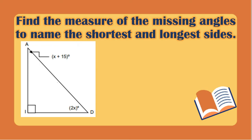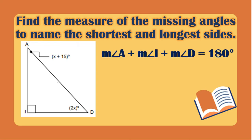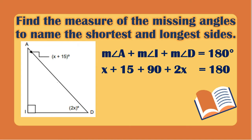To get the value of x we need to add all the angles: the measurement of angle A plus angle I plus angle D equals 180 degrees, the total measurement of the interior angles of a triangle. The measurement of angle A is x plus 15, angle I is a right angle so it is 90, and angle D is 2x. So x plus 15 plus 90 plus 2x equals 180.